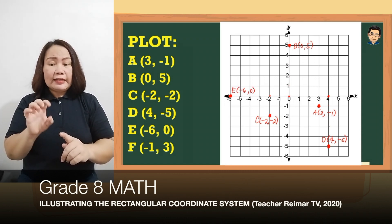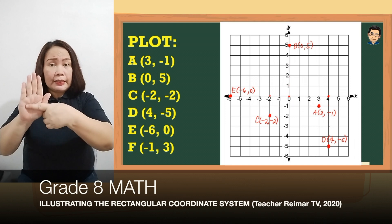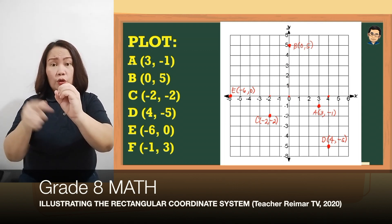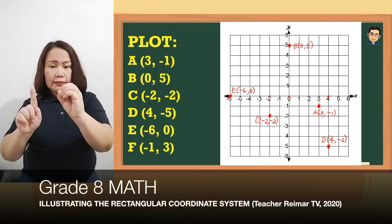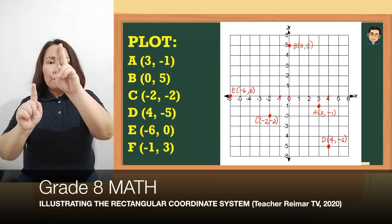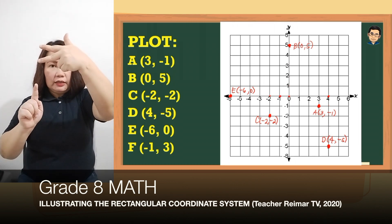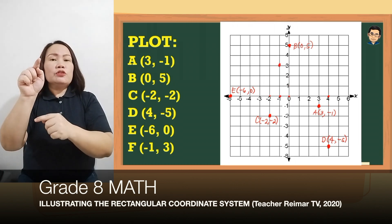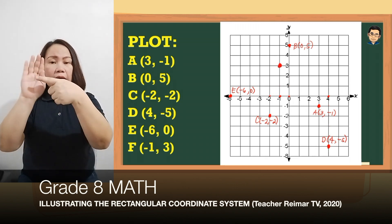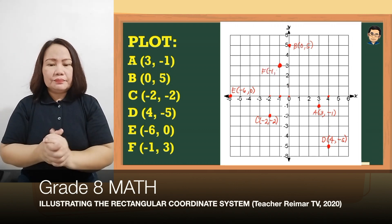Yung last po natin is yung F, (-1, 3). Yung negative 1 from 0 papuntang left — ito po yung negative 1. And then 3 steps upward. So nandito po yung (-1, 3). Pangalalan natin siya as F (-1, 3).